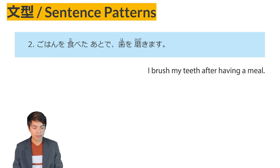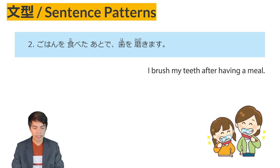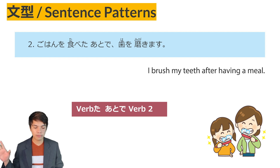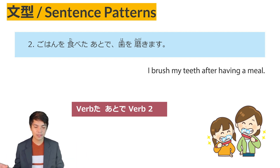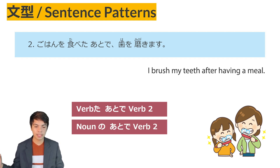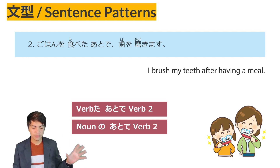Sentence Pattern No. 2 uses verb ta-form ato de. It means that after doing verb 1, you will do verb 2. You can also use this pattern with nouns — the pattern becomes noun no ato de, meaning after the noun, you will do verb 2.